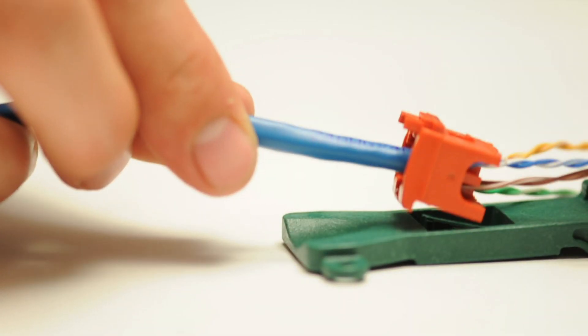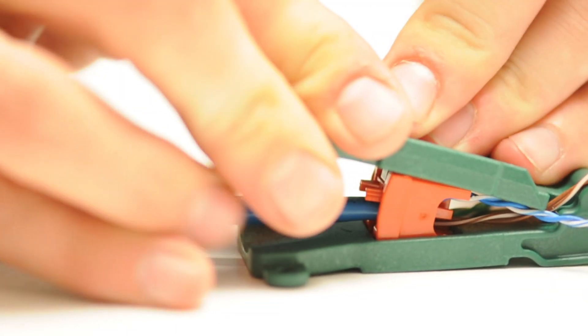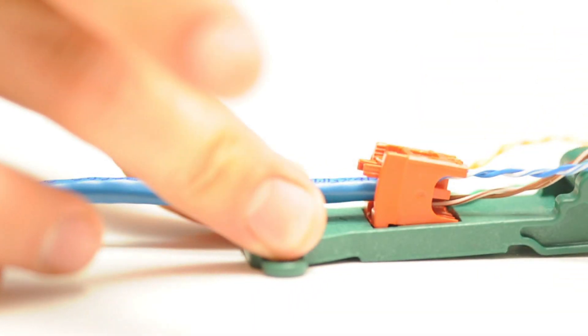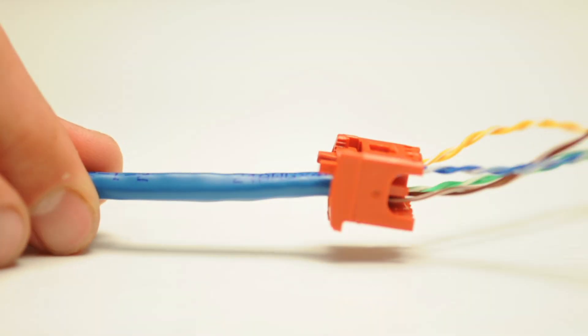Taking the guide and inserting it into the Minicom termination tool, I simply push it down and this secures the lock on the back to pinch the jacket to keep it seated properly.